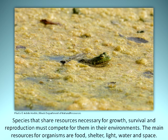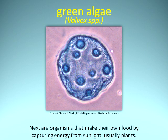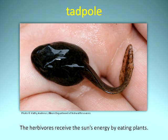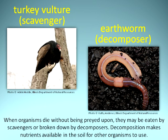Species that share resources necessary for growth, survival, and reproduction must compete for them in their environments. The main resources for organisms are food, shelter, light, water, and space. A food chain is a sequence of energy transfer. It starts with the sun, a primary energy source. Next are the organisms that make their own food by capturing energy from sunlight, usually plants. The herbivores receive the sun's energy by eating plants. Carnivores are the next link — they feed on herbivores and other animals, and the sun's energy continues to be transferred. When organisms die without being preyed upon, they may be eaten by scavengers or broken down by decomposers. Decomposition makes nutrients available in the soil for other organisms to use.